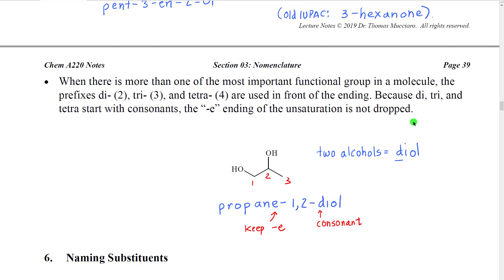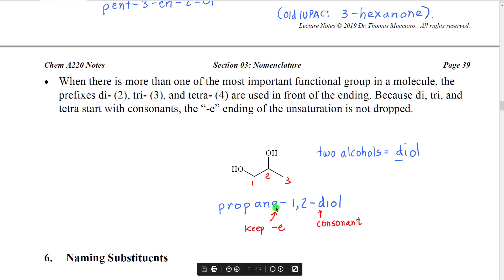When there is more than one of the most important functional group in a molecule, we group the endings together and use the prefixes di, tri, or tetra. For example, a three-carbon molecule with two alcohols: the parent is 'prop', no unsaturations so we use '-ane', and because 'di' before '-ol' starts with a consonant, we keep the 'e'. With alcohols at carbons one and two, we get propane-1,2-diol.